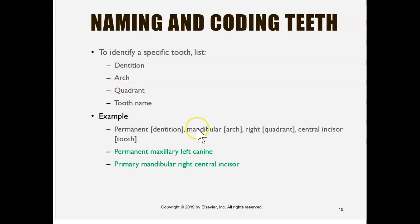When we want to identify one tooth we have to look at four things. First, what dentition — is it the baby or primary dentition, or is it the adult or permanent dentition? Then we look at which arch — is it the maxillary top arch or the mandibular bottom arch? Then we look at quadrant — is it the right or left quadrant? And finally we end with the tooth name.